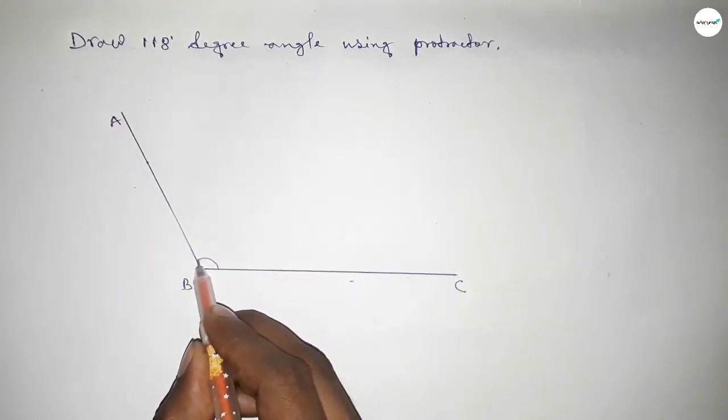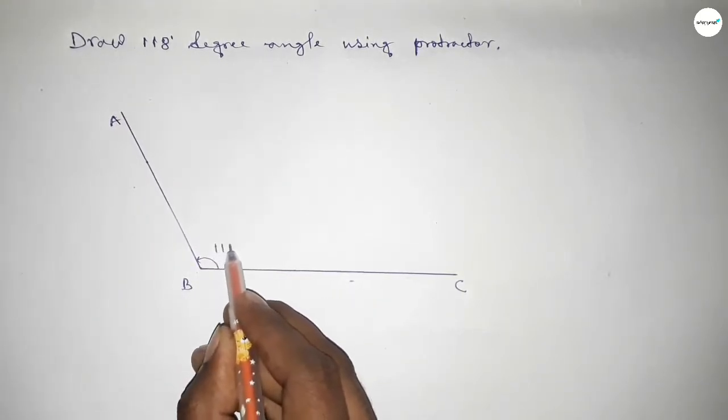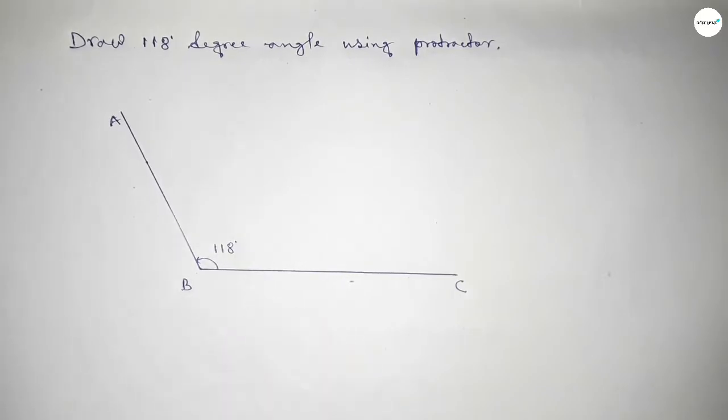So angle ABC up to this, this is 118 degree angle. So therefore angle ABC is equal to 118 degree angle.